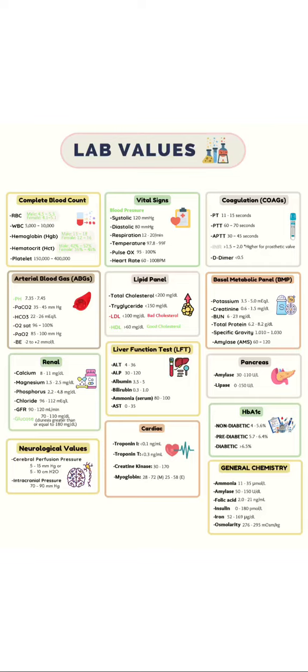BMR — basal metabolic panel, the chemical profile. We have information about potassium, creatinine, blood urea nitrogen, total protein, specific diabetes markers, and amylase. They are all given.